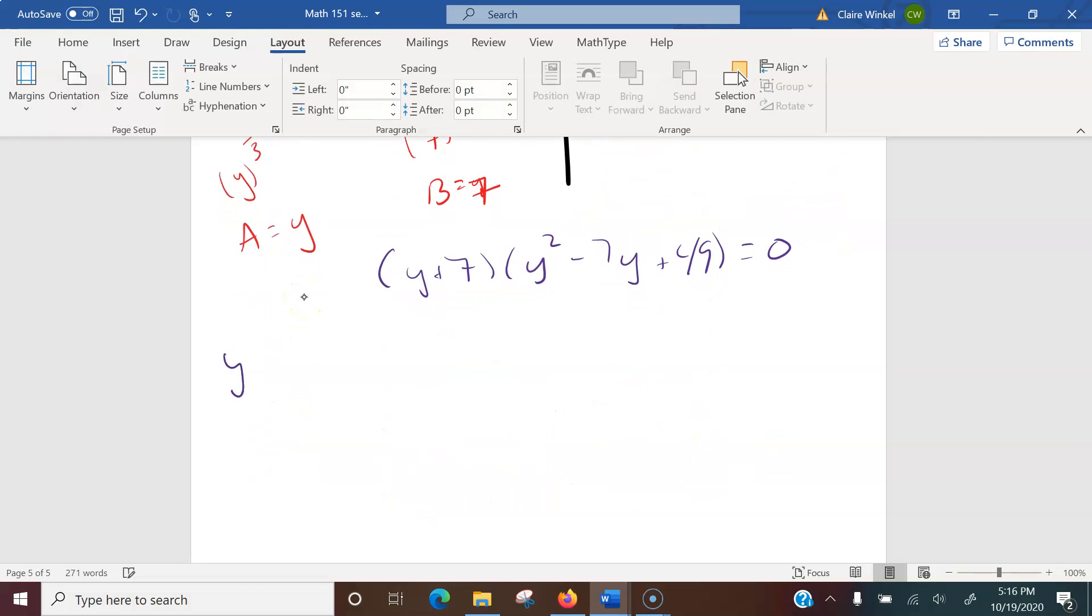So here, I've got the y plus 7 equals 0. Over here, y squared minus 7y plus 49 equals 0. This one, we get y equals negative 7. That's what we expected to get, or I guess maybe not expected, but that's the same thing that we would have gotten if we had graphed.